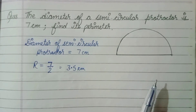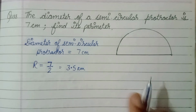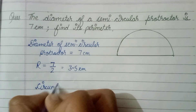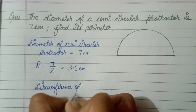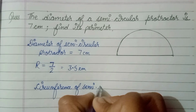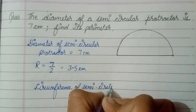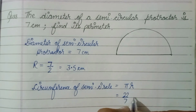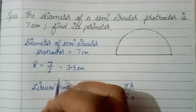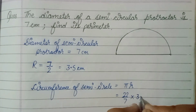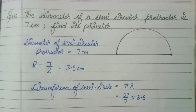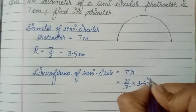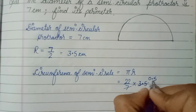If we have to find out the circumference of a semicircle, there is a formula which is pi r. So the circumference of the semicircle is pi r, where the value of pi is 22 by 7, and r is 3.5 centimeters.